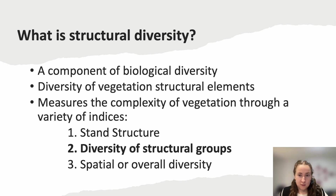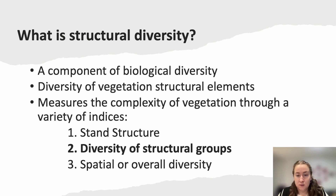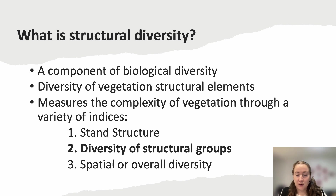A little bit of background. What is structural diversity and how does it fit into the overall umbrella of diversity? It is a component of biological diversity, similar to species diversity or species richness. However, instead of looking at individual species, it groups vegetation or species based on similarity in structural elements. So it measures the complexity of vegetation using a variety of indices: the first being stand structure, looking at tree diversity based on whether it is living or dead, with dead trees assigned a decay stage and all trees assigned a relative height. The second is the diversity of structural groups — categories of vegetation structural groups — and that is the focus of this presentation.